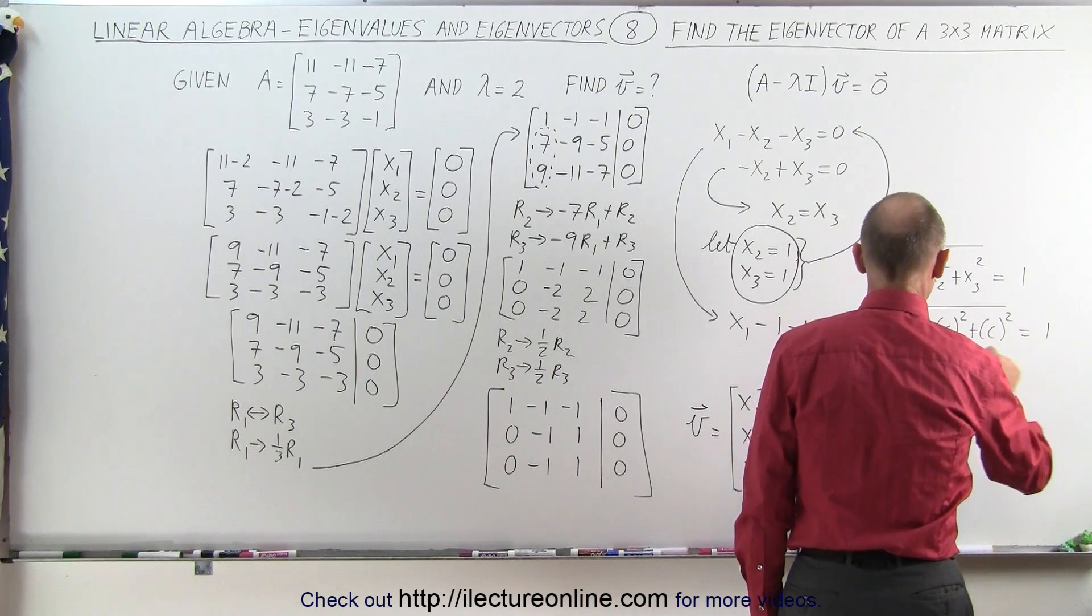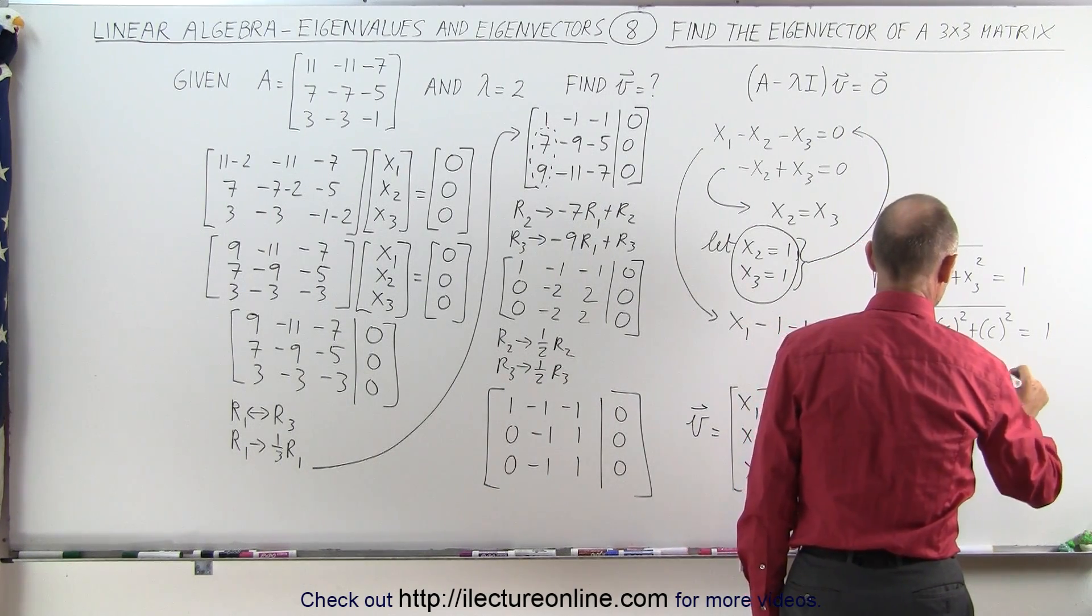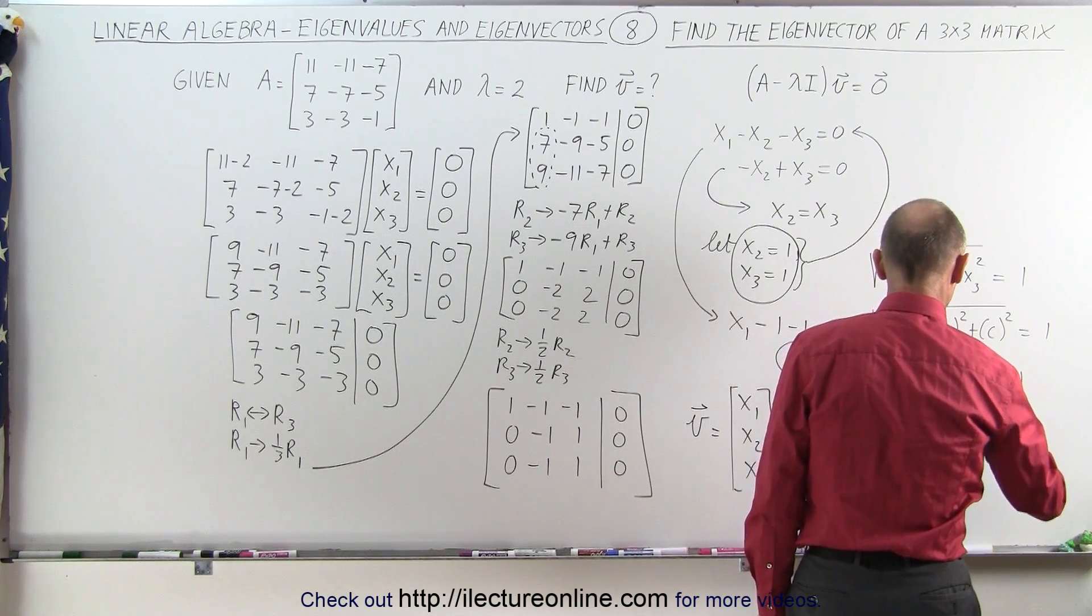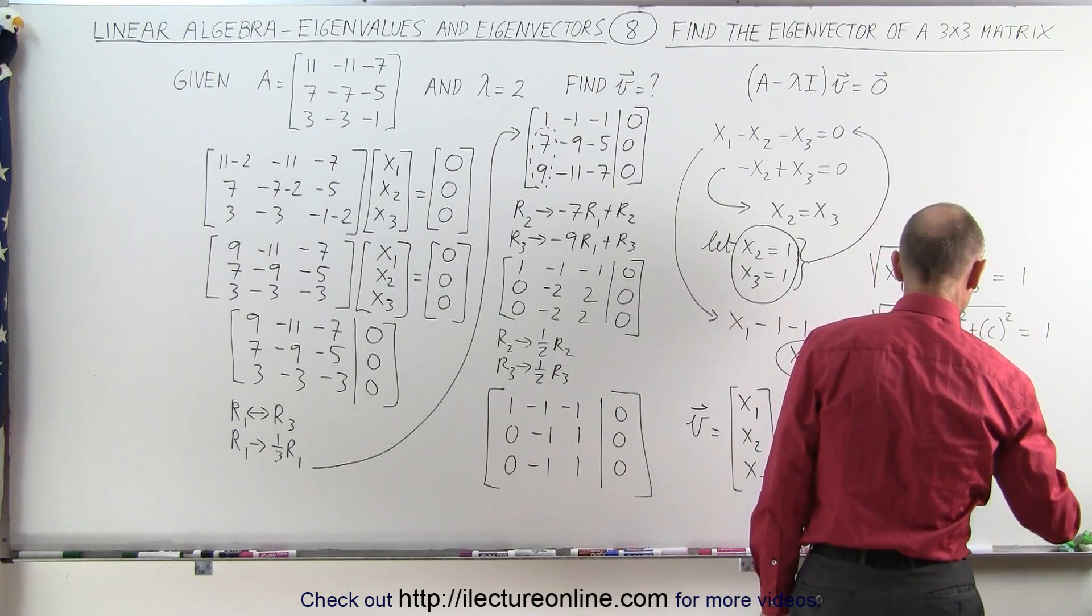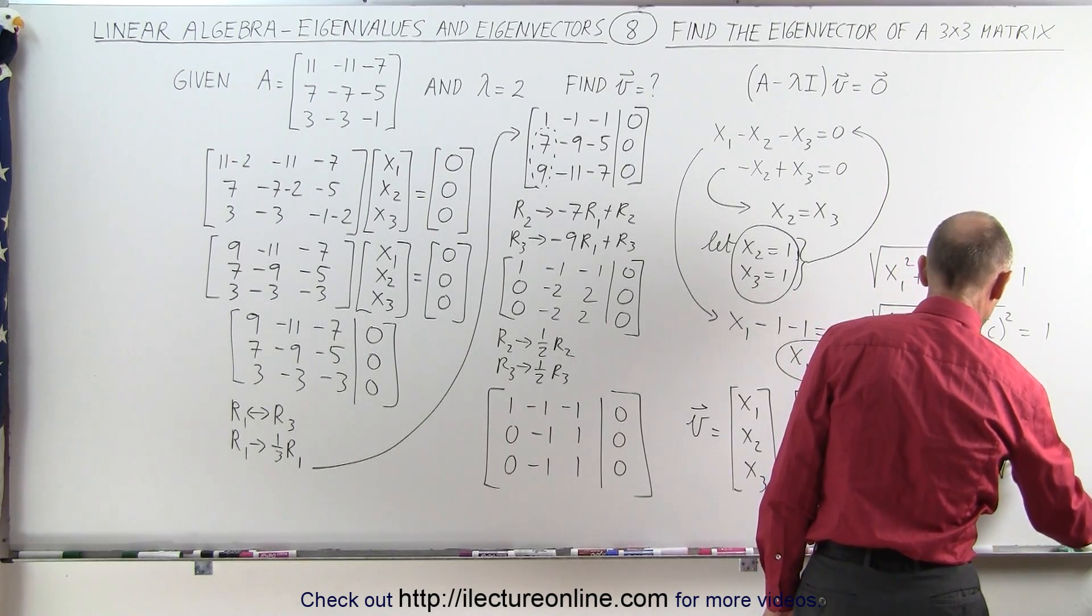this will give me the square root of 4c squared plus c squared plus c squared equals 1. Or, the square root of 6c squared equals 1. Or, in other words, c is equal to 1 over the square root of 6.